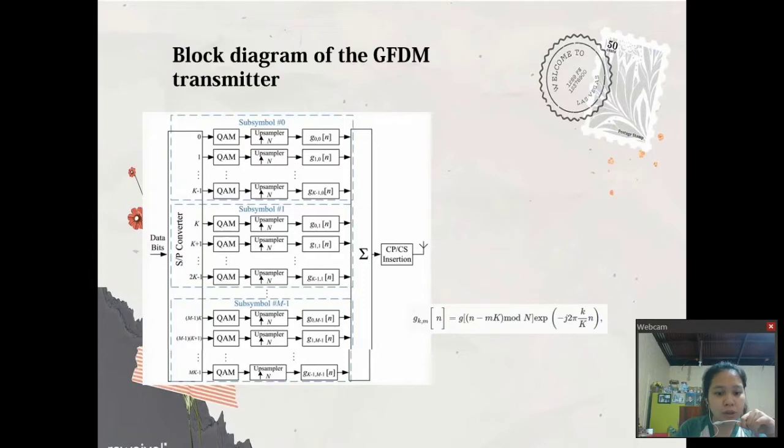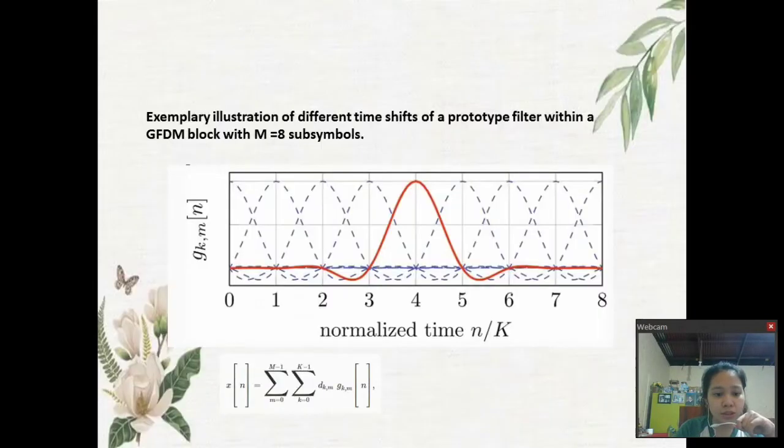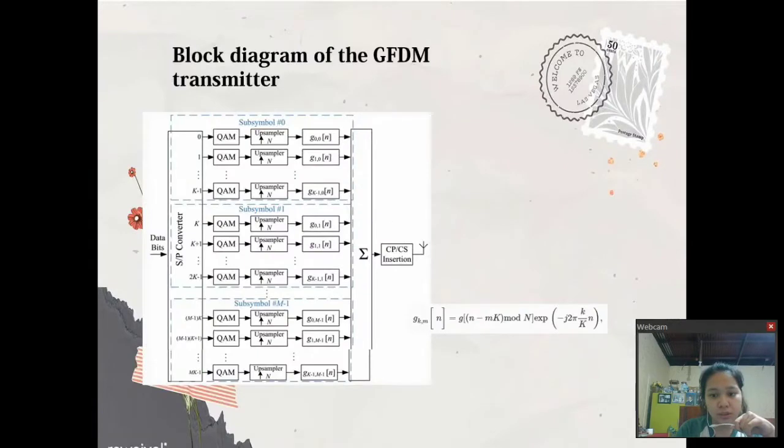This example is where zeros are appended. These sequences are filtered with the corresponding transmit filter, the GKM matrix at the formula at the right side, where G of N denotes the impulse response of the prototype filter with N samples, while K, M, and N are the subcarrier, sub-symbol, and time-sample indices, respectively.